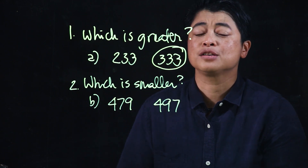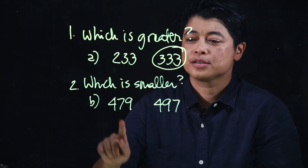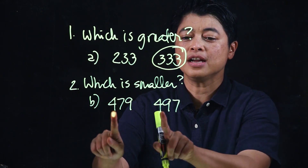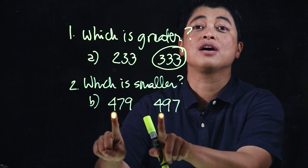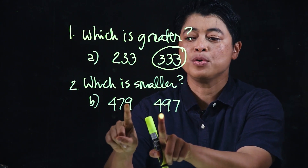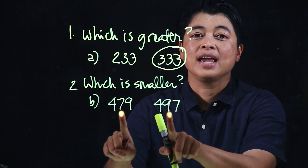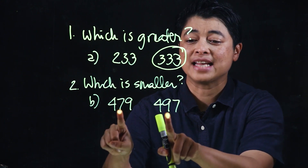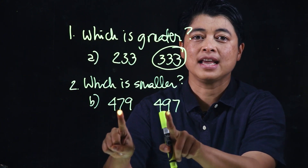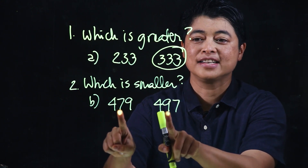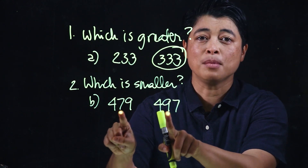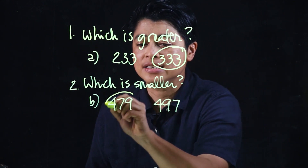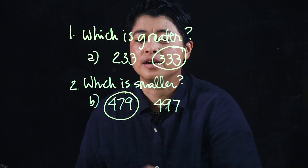In this problem it says 'which is smaller?' If we look at the hundreds place, the hundreds digits are the same, so we move to the next place. Looking at the tens place, this is seven tens and nine tens. Since seven is smaller than nine, this is the smaller number.